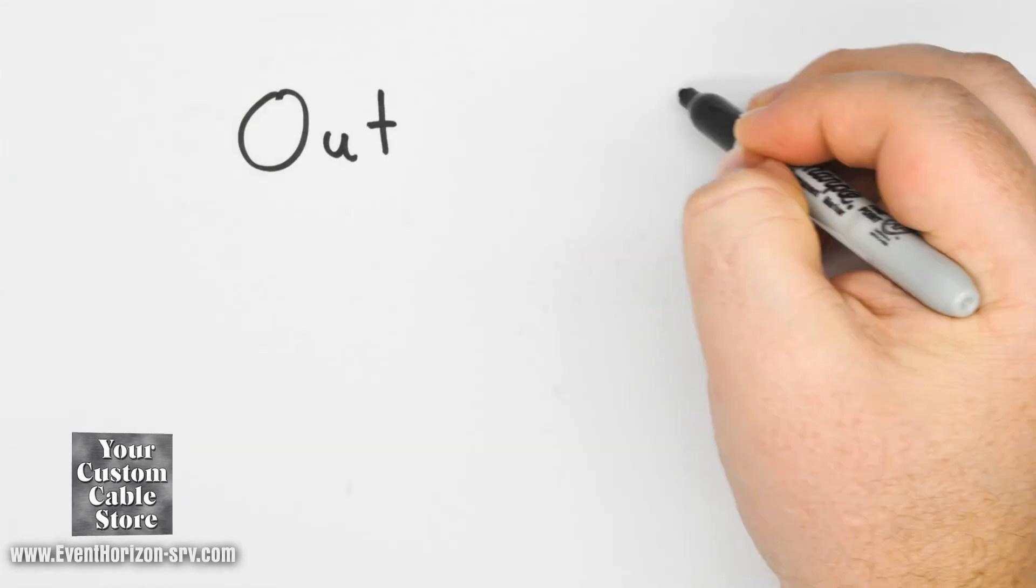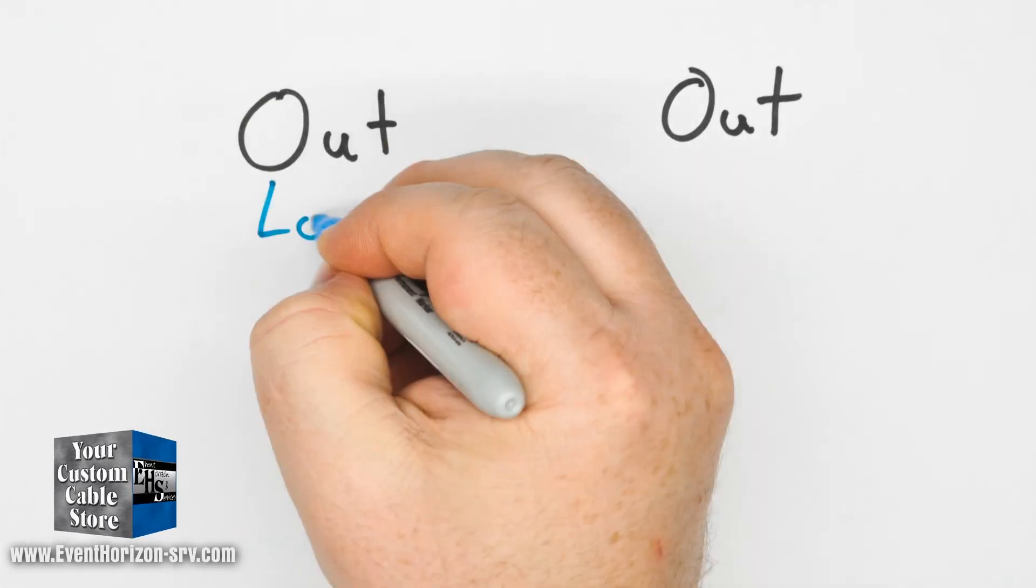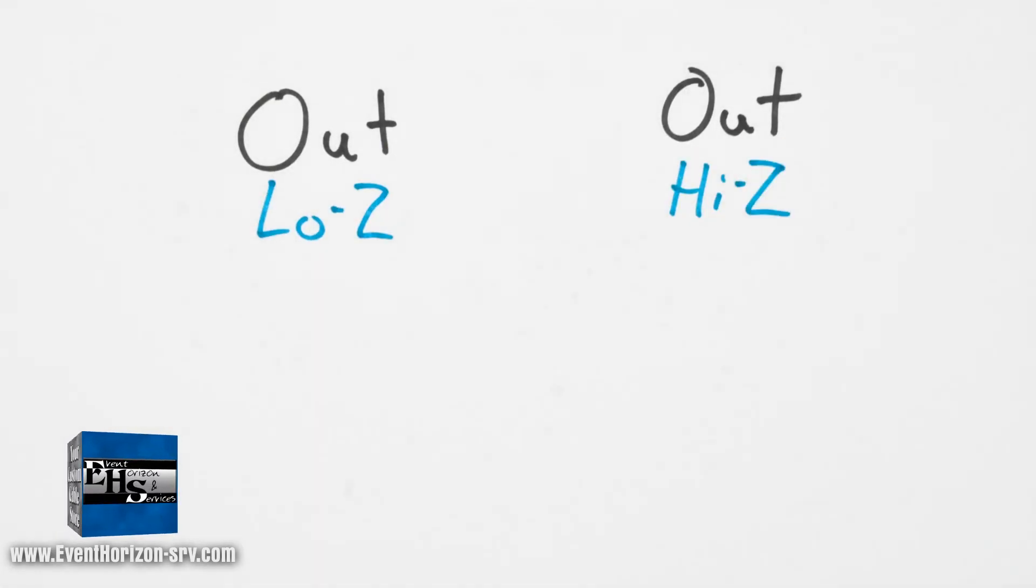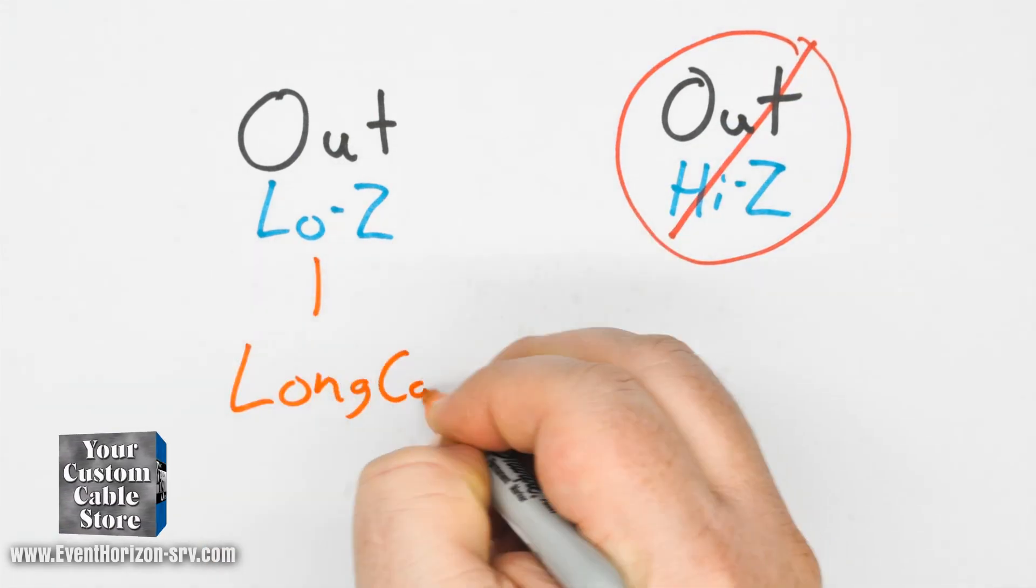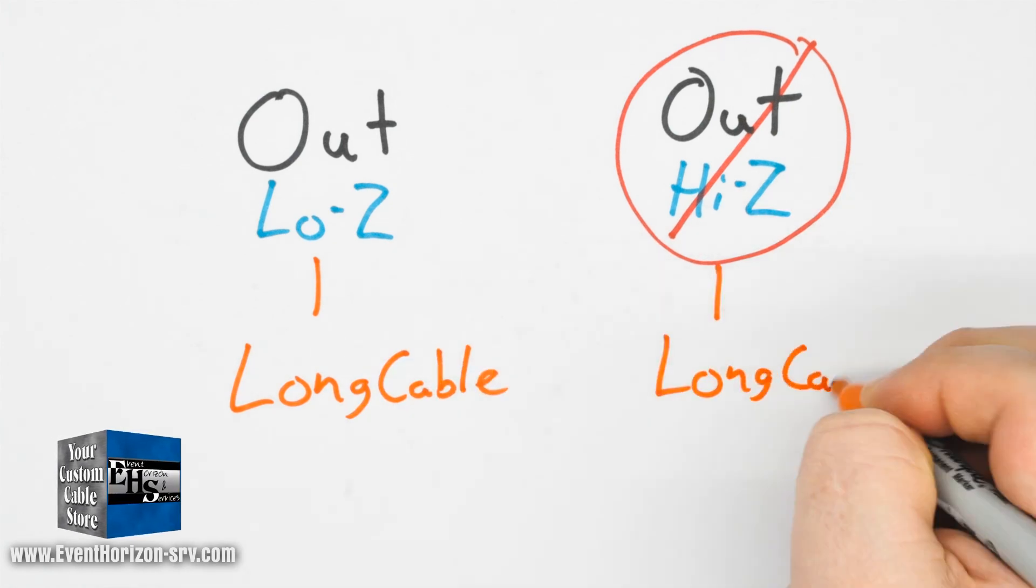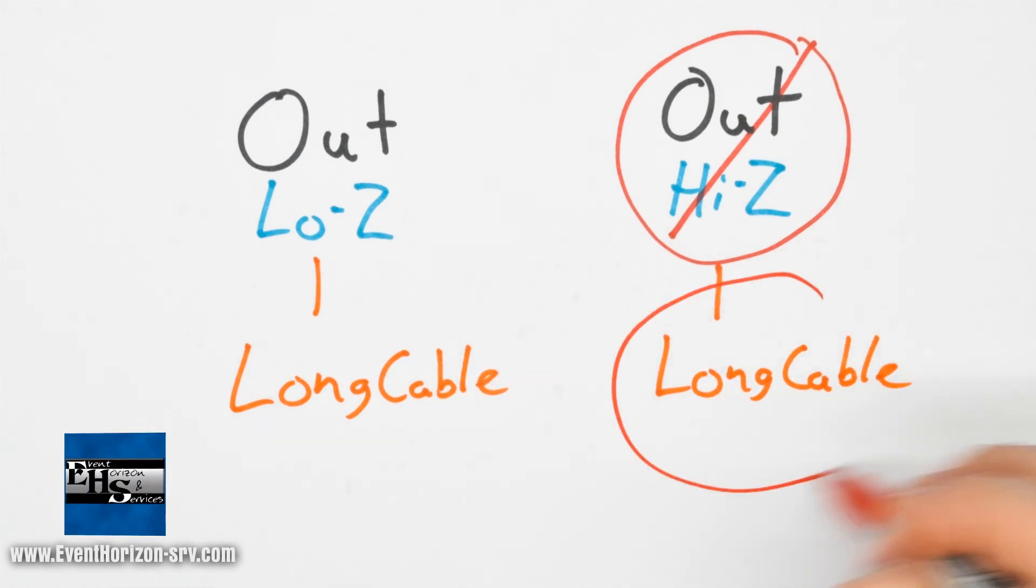The conclusion of this test shows us two things. You are better off with a lower impedance output, and that if you have a higher impedance output, the longer you run the cable, the more high end you will lose with little or no change in the low end.